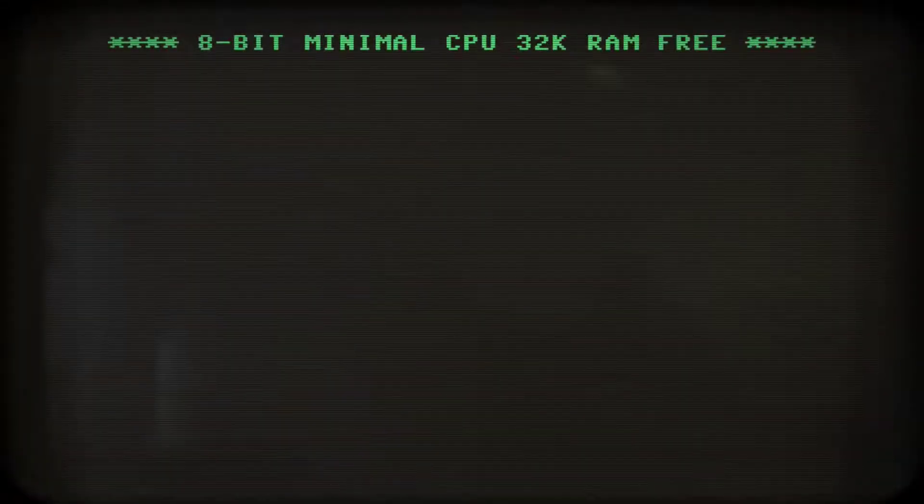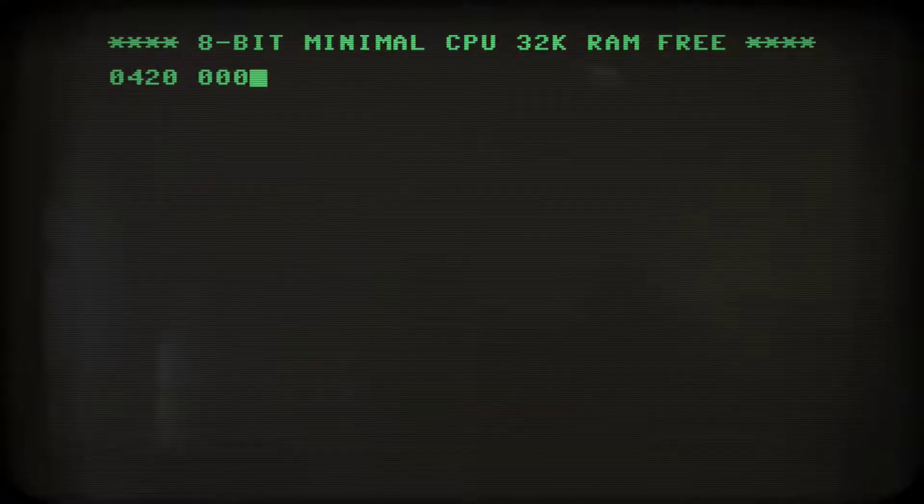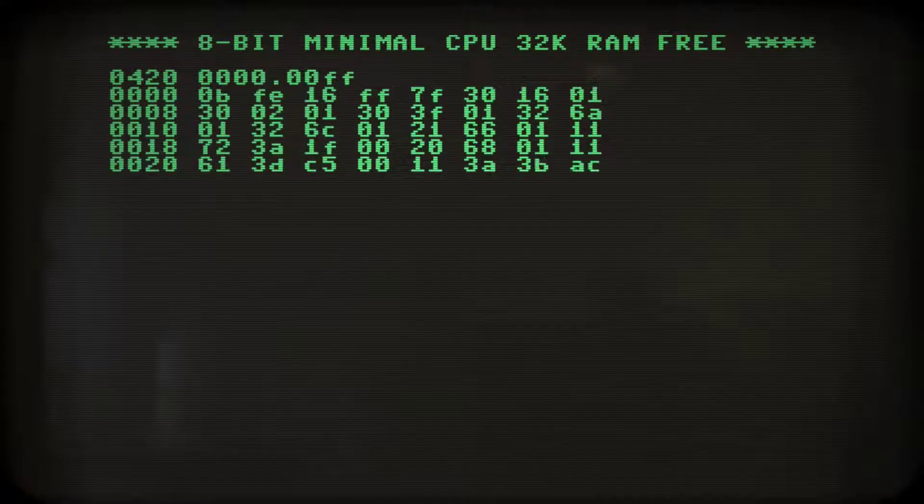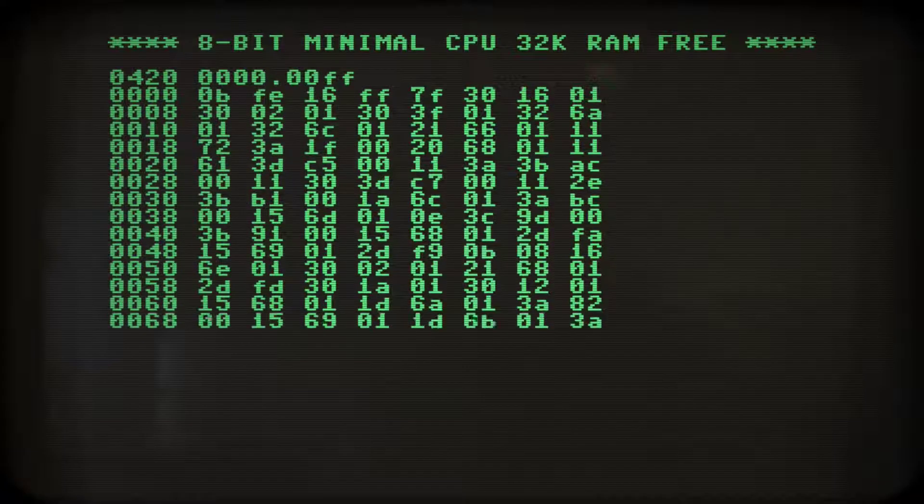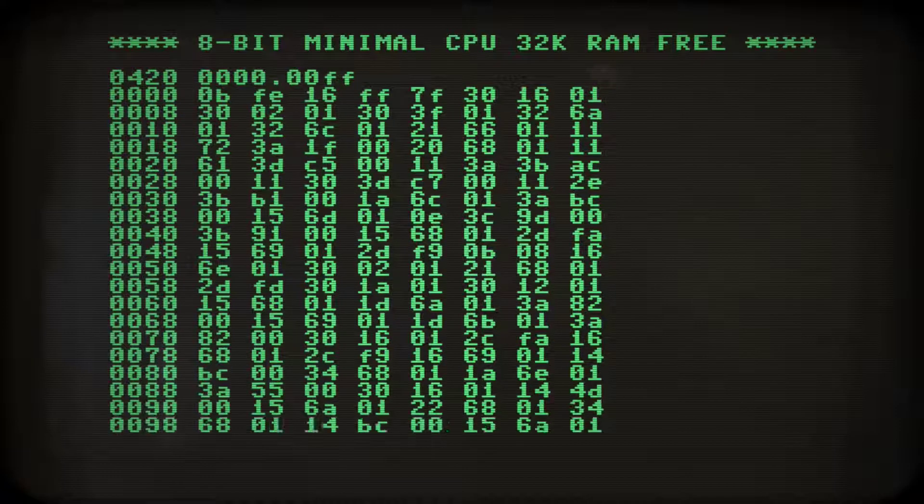In the last two episodes, we explored how microcode defines the instruction set of our CPU. But so far, we haven't made any use of the three flags of our CPU: the negative, the carry-out, and the zero flag. In short, N, C, and Z flag.